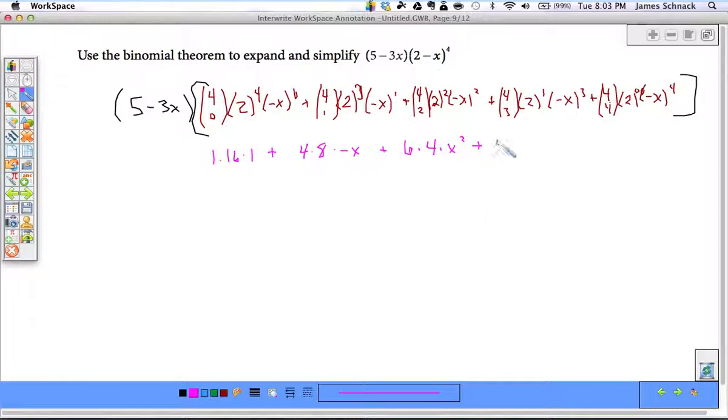Plus 4 times 2 times negative x cubed. So 5 minus 3x times 16 minus 32x plus 24x squared minus 8x cubed plus x to the fourth.